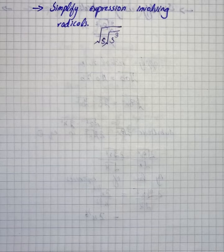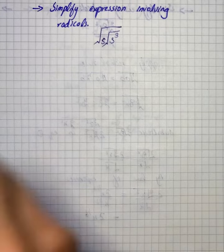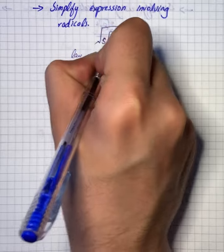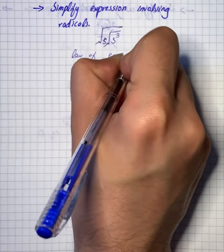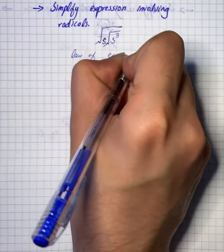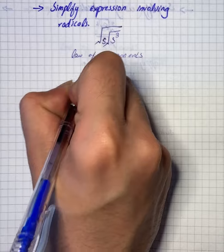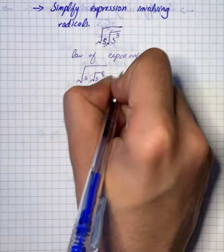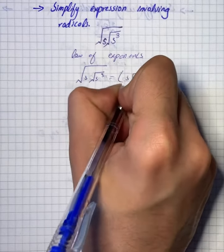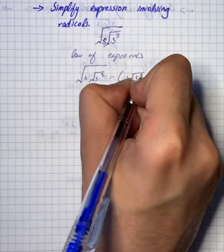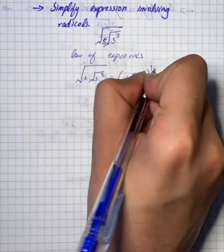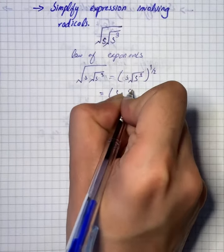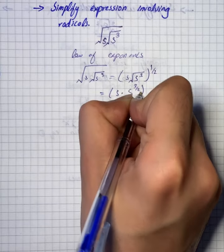Here we have an expression to simplify. First of all, we will use the law of exponents. We have √s · √(s³), which is equal to s · (s³) raised to the power 1/2, giving us s · s raised to the power 3/2.